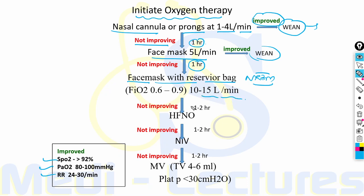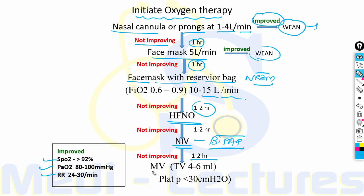With NRBM we can give up to 15 liters per minute and generate FiO2 up to 80%. If not improving after 1 to 2 hours, we move to high flow nasal cannula, then NIV or BiPAP. If again not improving, we place the patient on mechanical ventilation at low tidal volumes of 4 to 6 ml with plateau pressure less than 30 centimeters of water.